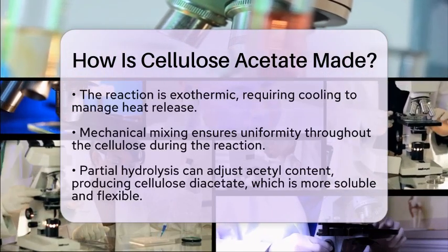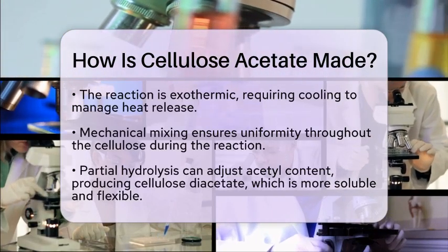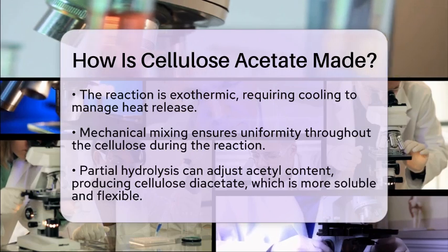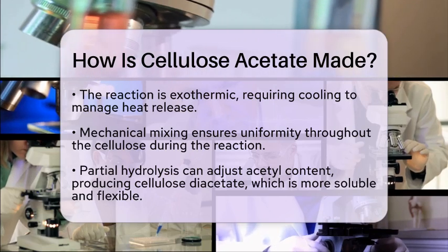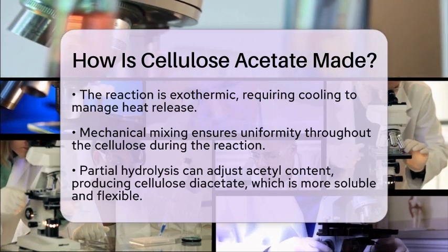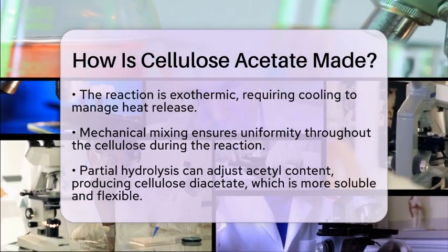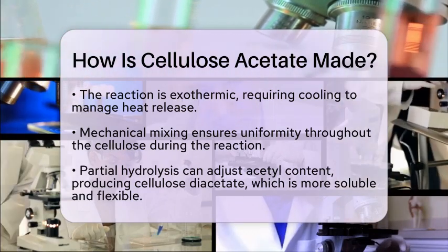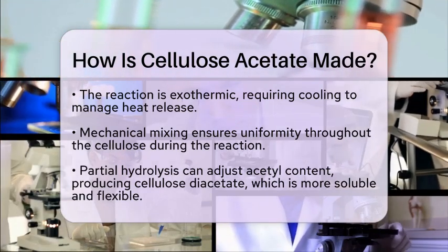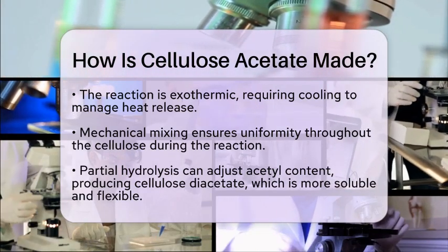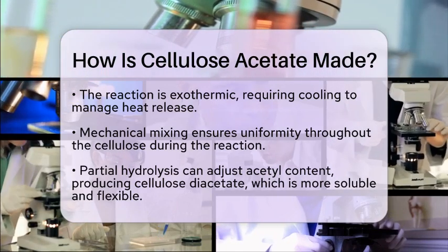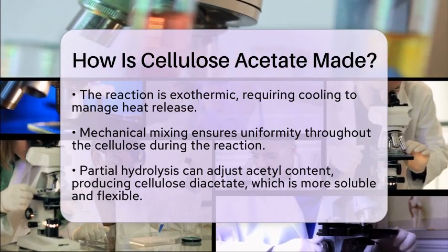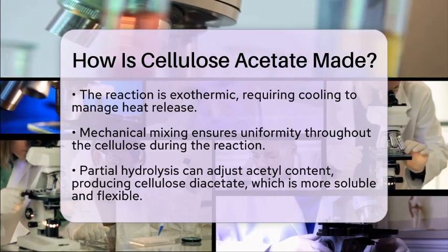Once we have our desired product, we move on to purification and washing. The reaction mixture contains byproducts like acetic acid and leftover catalysts. Washing the cellulose acetate with water helps remove these impurities and any unreacted chemicals, separating the cellulose acetate from the solvent.